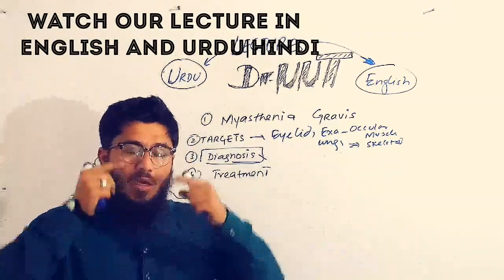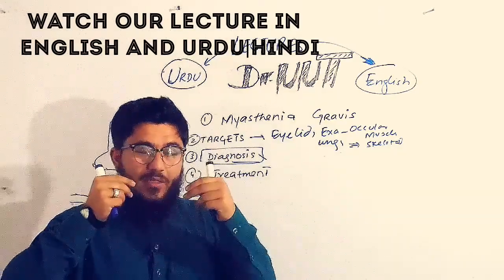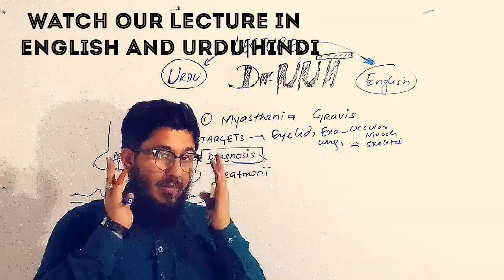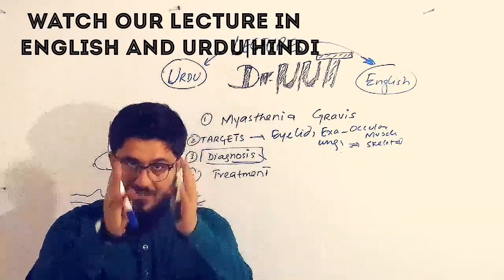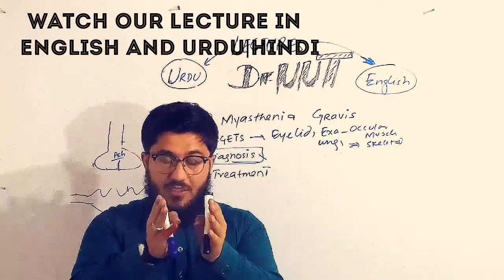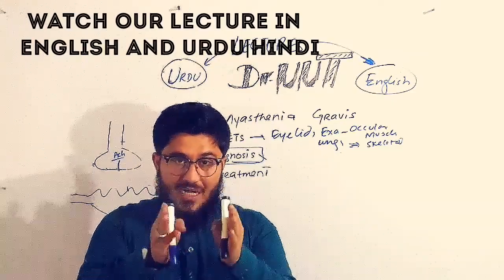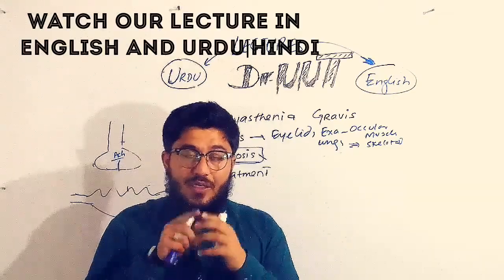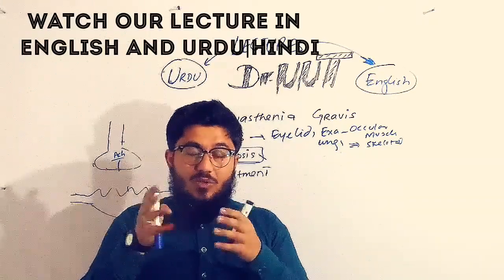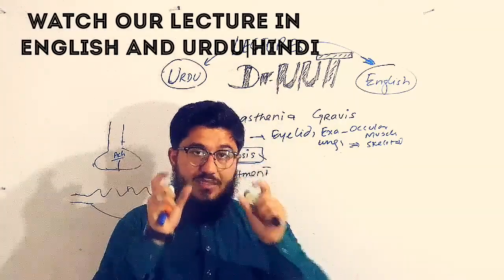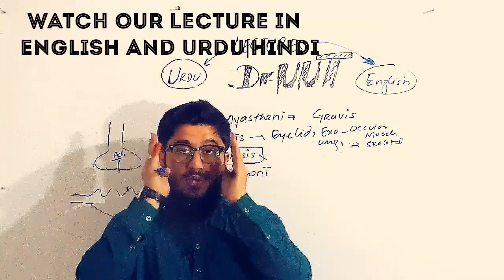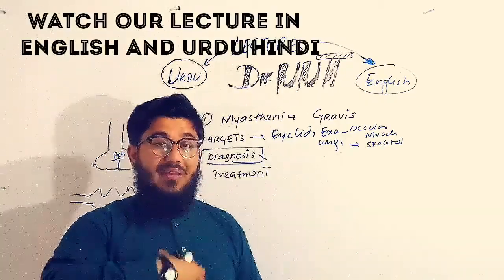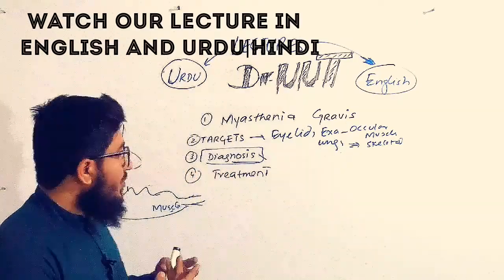If these muscles become weak, what will happen? Eyelid drooping — a person will find it difficult to lift up the eyelids. When extraocular muscles become weak, the person is not able to concentrate at a specific point for a longer period. The eyes will move to the periphery because these extraocular muscles hold the eye and help you focus. In the lungs, you will feel difficulty in breathing, which might lead to death.